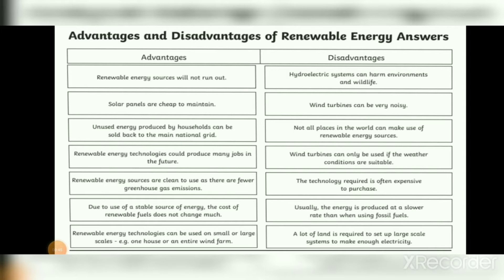Number four: renewable energy technologies could produce many jobs in the future. Number five: renewable energy sources are clean to use as there are fewer greenhouse gas emissions. Number six: due to use of a stable source of energy, the cost of renewable fuels does not change much. Number seven: renewable energy technology can be used on small or large scale, for example one house or an entire wind farm.